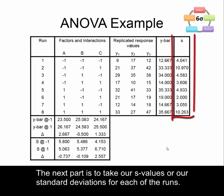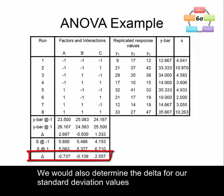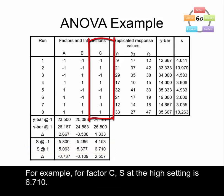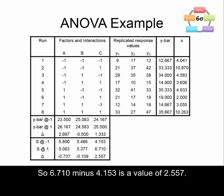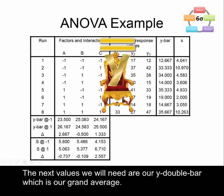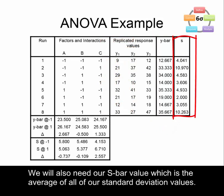Next we take our s values — our standard deviations for each of the runs — and calculate the s values just like we did for the y values, but now using the s column. We also determine the delta for our standard deviation values by taking the standard deviation at the high setting minus the standard deviation at the low setting. For example, for factor C, s at the high setting is 6.710 minus s at the low setting of 4.153, giving a delta of 2.557. We also calculate y double bar — the grand average of all y-bar values — and s-bar, the average of all standard deviations.